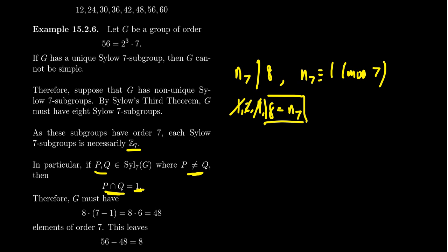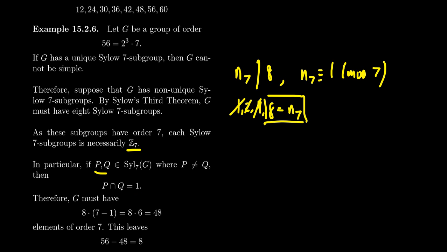So none of these Sylow 7 subgroups contain anything in common except for the identity. So each of them is going to contain 7 minus 1, aka 6, elements of order 7 that none of the other subgroups have. And by the assumption that it's non-normal, the Sylow 7 subgroup, we have to have 8 of them. So we end up with 8 times 6 many elements of order 7, which gives us 48 elements total.